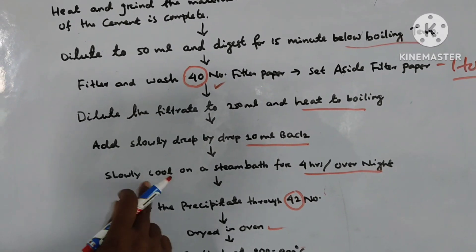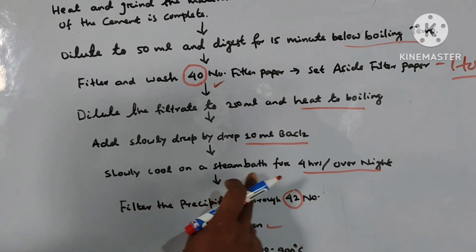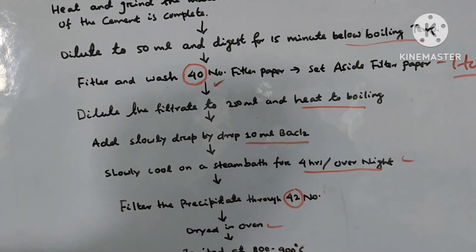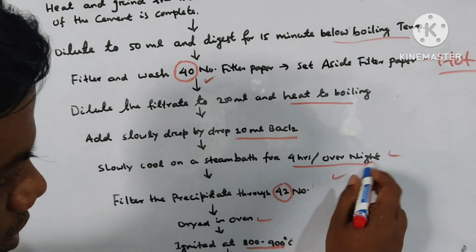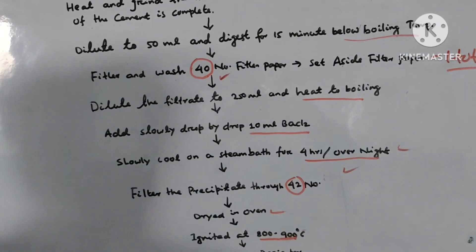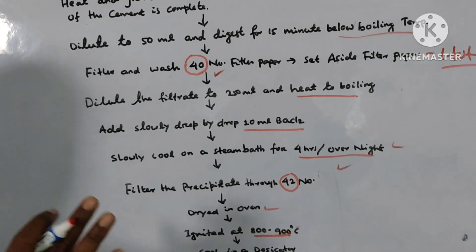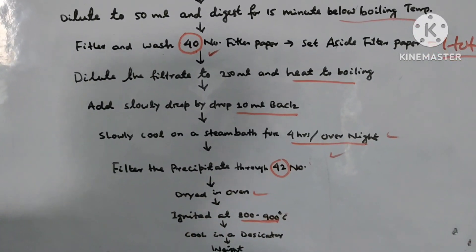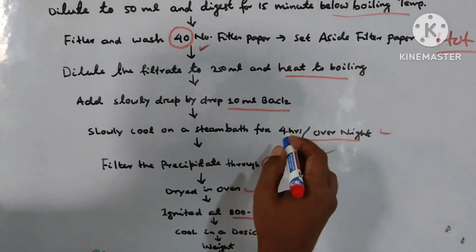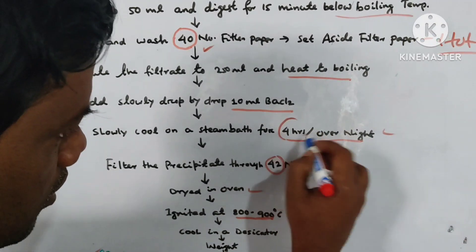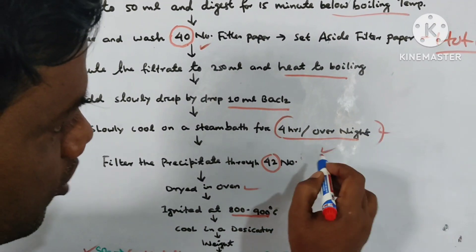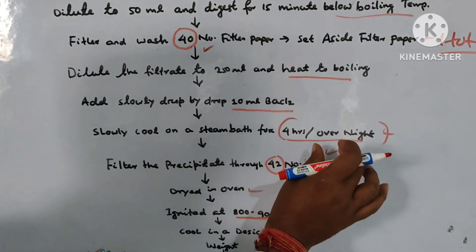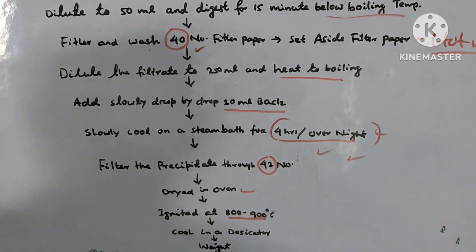Dilute the filtrate to 250 ml and heat to boiling. Then slowly cool on a steam bath for four hours or overnight. This is very important — we have to place it on the hot plate or steam bath for four hours, but overnight is best.